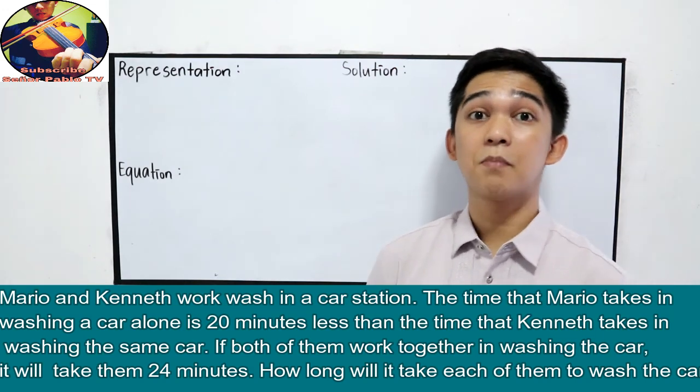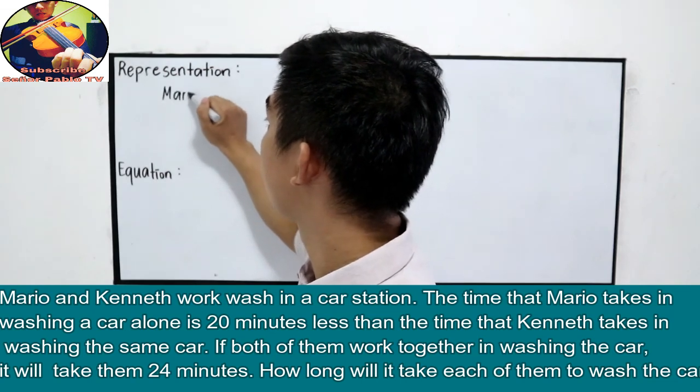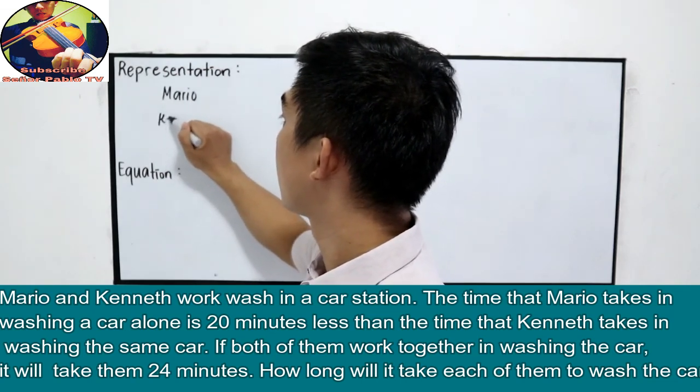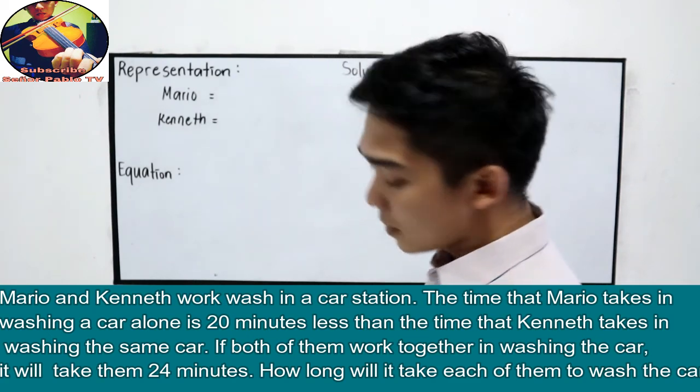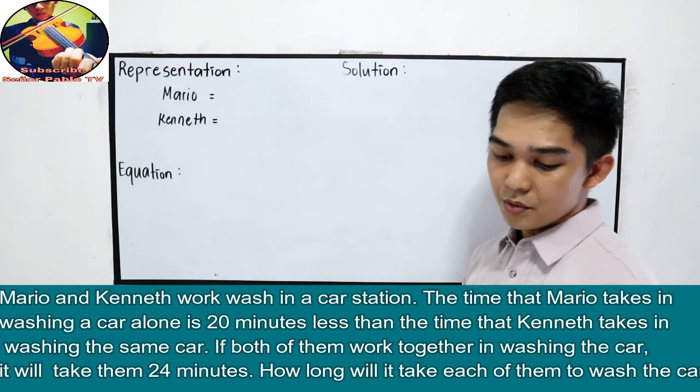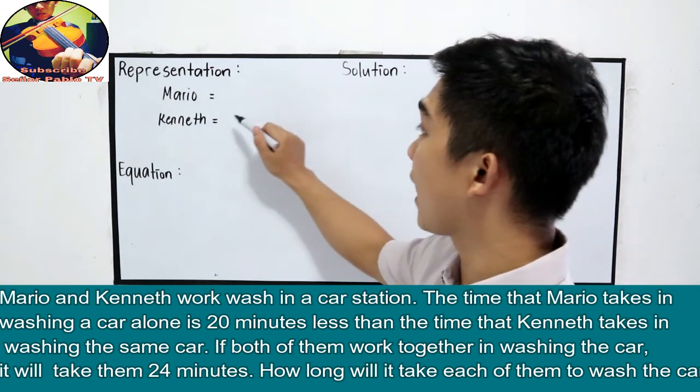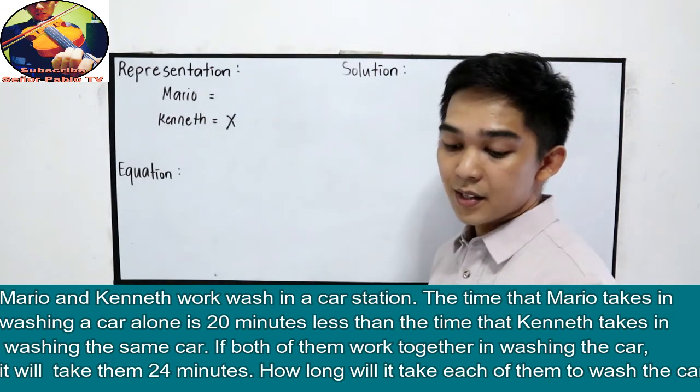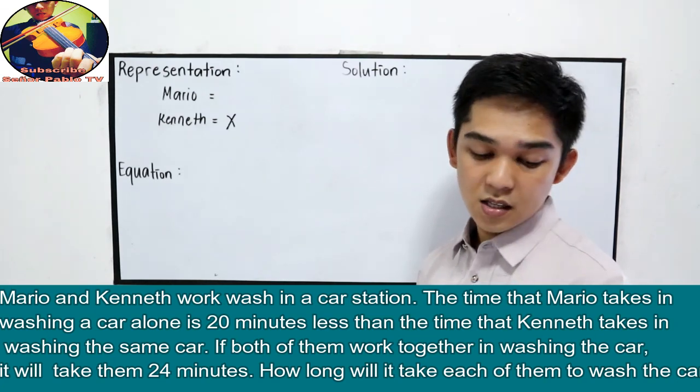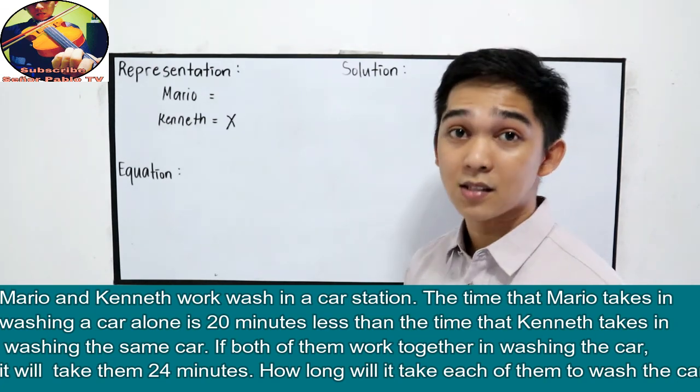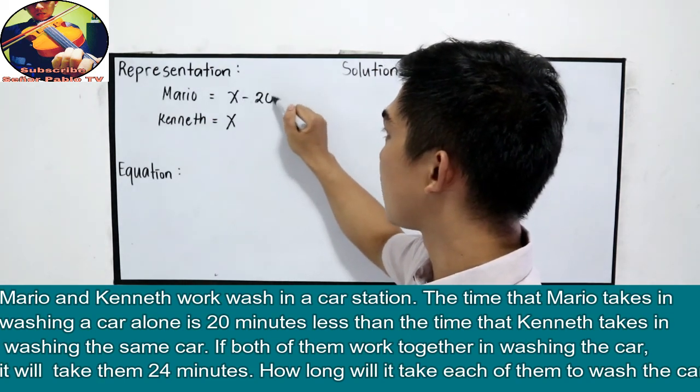So meron daw tayo si Mario tsaka si Kenneth. Si Mario daw kinocompare siya kay Kenneth. So let's say Kenneth be our x. Then, kayo daw niyang tapusin yung isang car ng less than 20 minutes kay Mario. So, x minus 20.